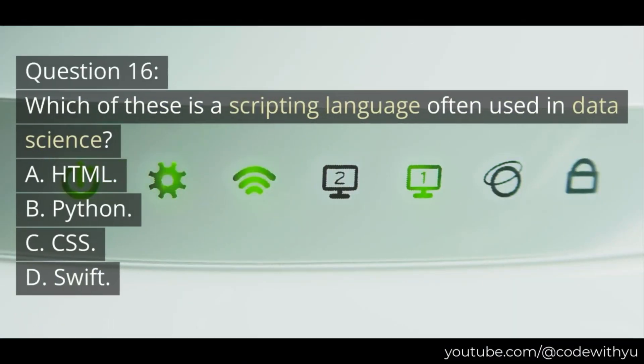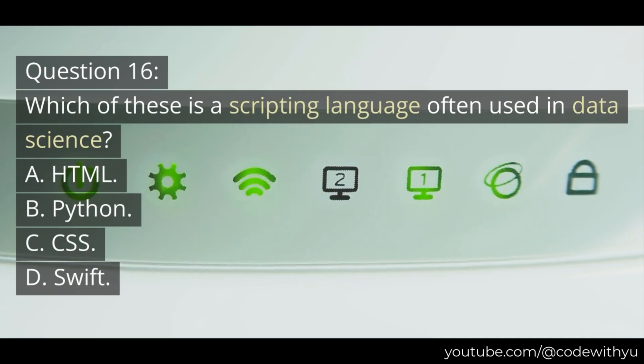Question 16. Which of these is a scripting language often used in data science? A. HTML. B. Python. C. CSS. D. Swift.